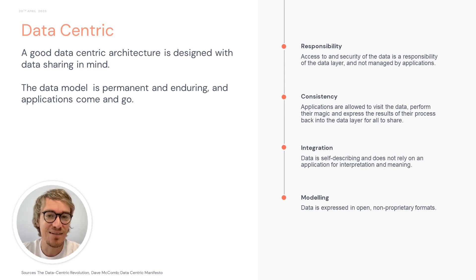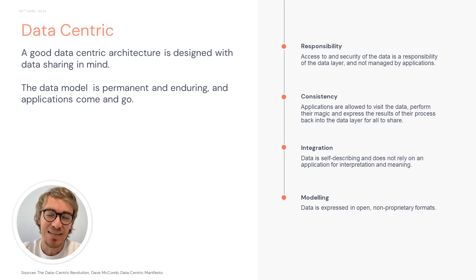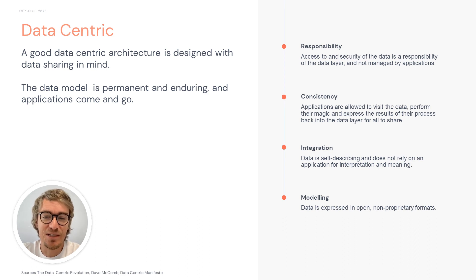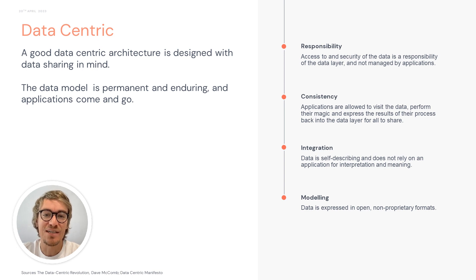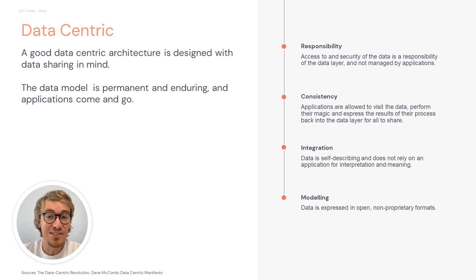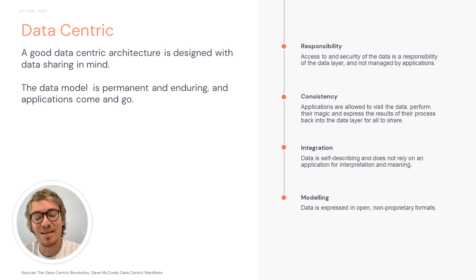Consistency is important. Applications can, if they have the access rights, get the data and do their magic on it. But they are expected to write the data back to the data layer so others can build their applications on top of it. The integration of data is really important — the data must be self-describing and not rely on the consuming application for interpretation and meaning. If you have to reinterpret the data in each and every application, it's not a problem you solve once, but every application built on the data layer has to solve it. That leads to wrong information at different data points.